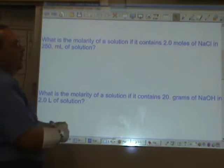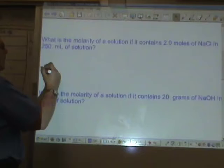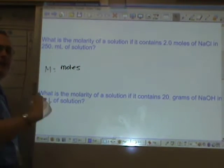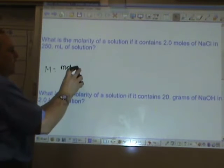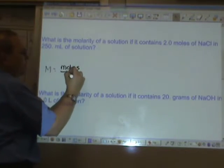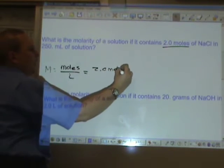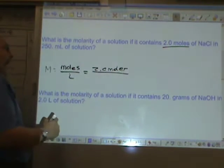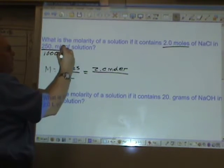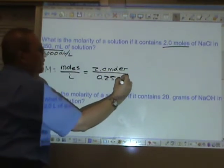What is the molarity of a solution if it contains 2.0 moles of NaCl and 250 milliliters of solution? Molarity equals moles, which you cannot abbreviate. Moles can be abbreviated M-O-L, but in which case, why even bother? Moles per liter. Now we have moles, 2.0. Divided by liters. We don't have liters. We have milliliters. We have to divide this by 1,000 milliliters per liter to get liters.